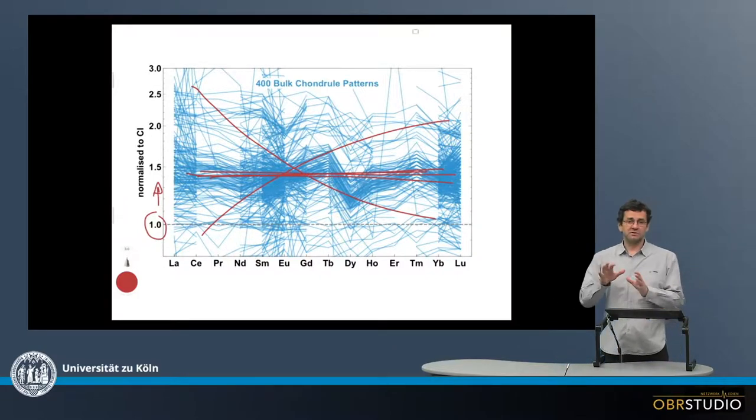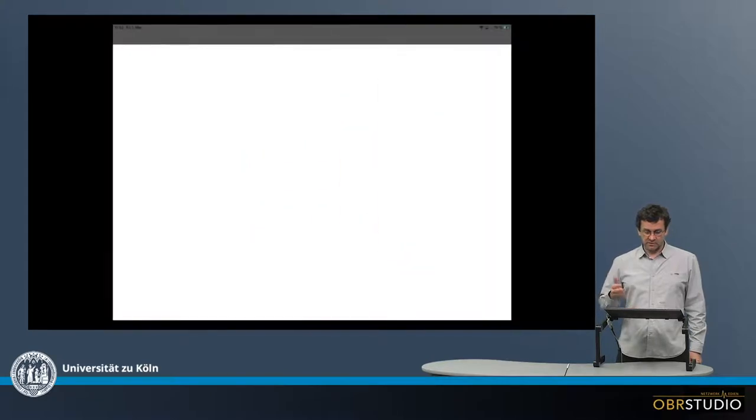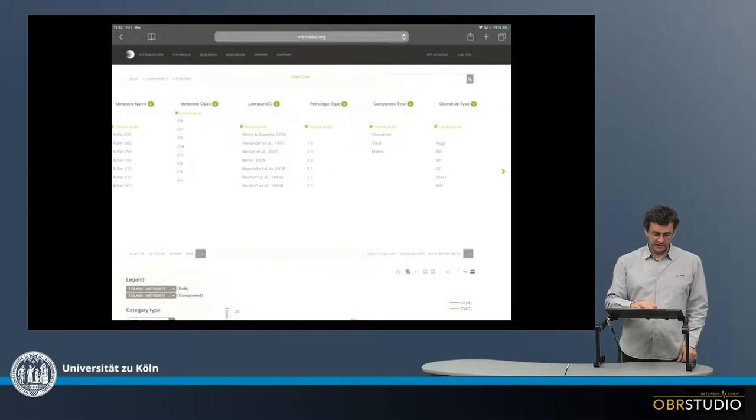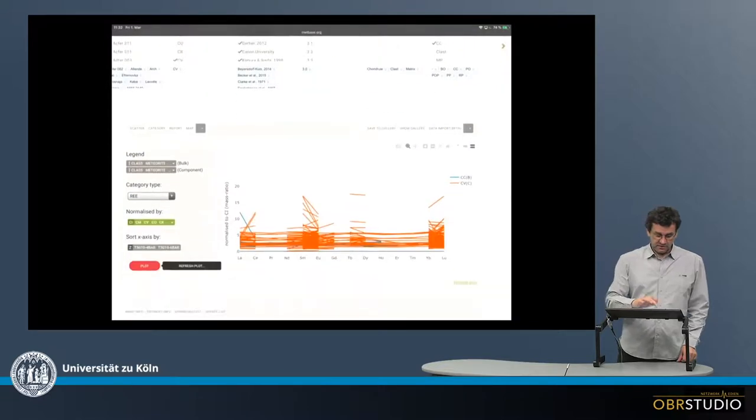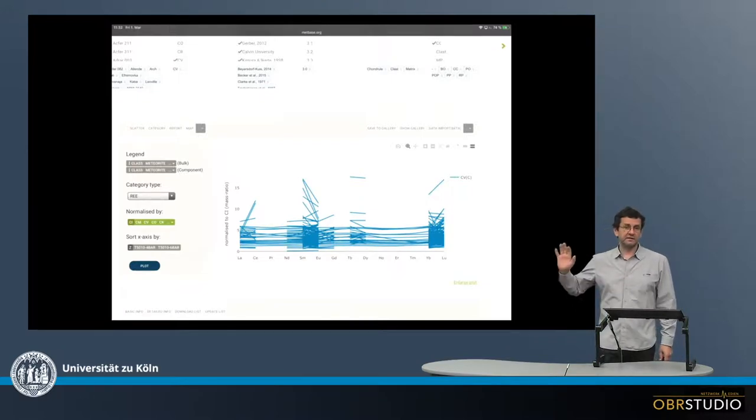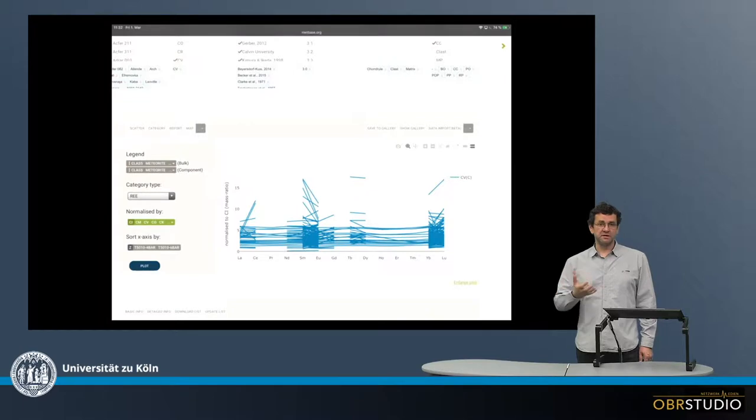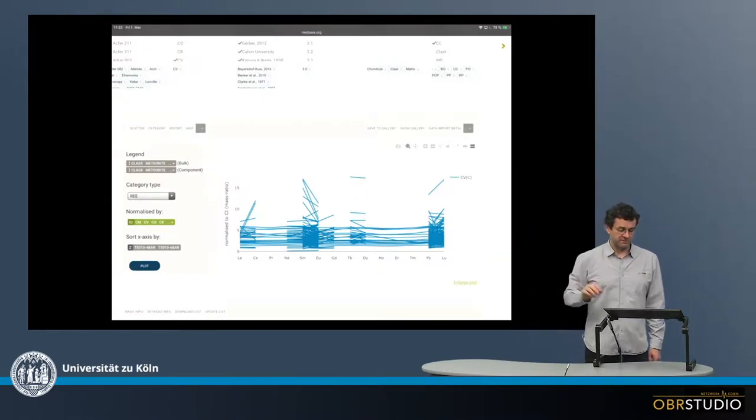Now, if you're interested to look in more detail for individual chondrules, we can, of course, use, for example, metbase. And then go here to the component database and select maybe something like CV chondrules. And then go to the category, or it's already shown here, so I just click on plot. And then here are the rare earth element patterns for CV chondrules. And again, you see they're all flat because this is the same database I used for the other plot here.